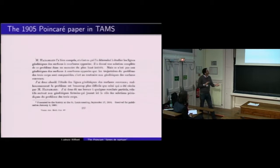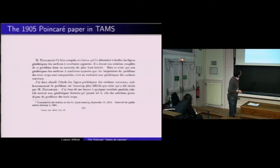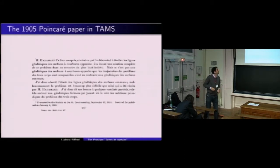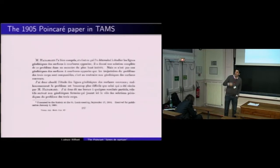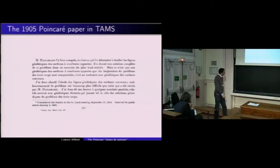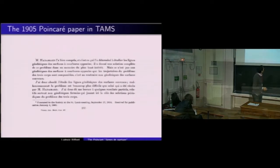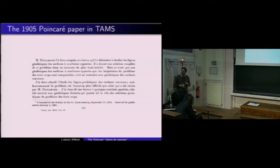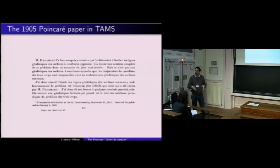Poincaré proposes to study geodesics on surfaces with positive curvature. The paper concerns two things: first, he studies what he calls the 'ligne de partage'; in the second part, he studies the existence of closed geodesics on the two-dimensional sphere. I would like to tell you the story of the ligne de partage, which became later the cut locus. Poincaré proved a few facts about it, and the story continues up to now — we are still facing many open problems.